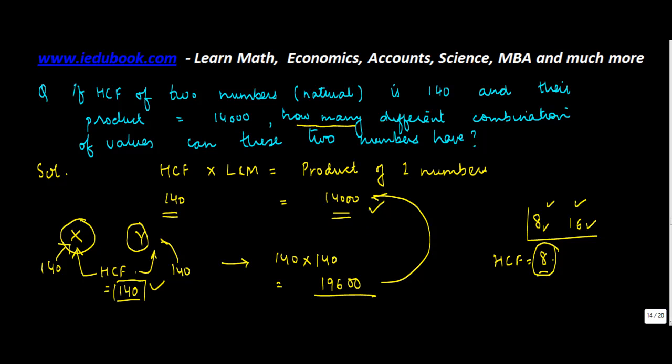So you were asked to find out how many different combinations of values can these two numbers have. Obviously they cannot have any set of values, it's zero, because if they have an HCF of 140 then the minimum product that they have to have is 19,600.